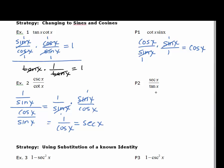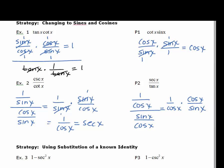Practice problem 2: secant is 1 over cosine, divided by sine x over cosine x. Multiply by the reciprocal: 1 over cosine x times cosine x over sine x. Cosine x cancels, giving us 1 over sine x. But to follow the instructions — no fraction in the answer — the final answer is cosecant x, which is 1 over sine.